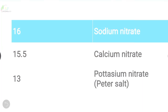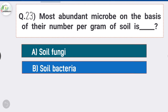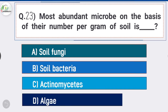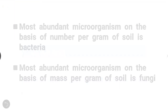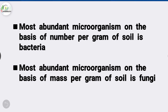Question number 23: Most abundant microbes on the basis of their number per gram of soil is? Answer is option B, soil bacteria. Most abundant microorganism on the basis of number per gram of soil is bacteria, whereas the most abundant microorganism on the basis of mass per gram of soil is fungi.